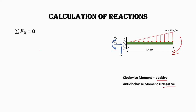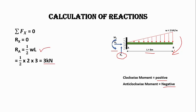To calculate the reaction forces, we use the condition of equilibrium: summation of all forces in the x direction equals zero. In this case we do not have any load acting in the x direction, so Rx equals zero. For Ra, we have a triangular load acting on the beam, so the total load is calculated using the area of a triangle: 1/2 × base × height. The base is 3 meters and the height is 2 kilonewton per meter, giving Ra equal to 3 kilonewton.